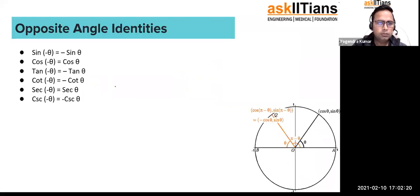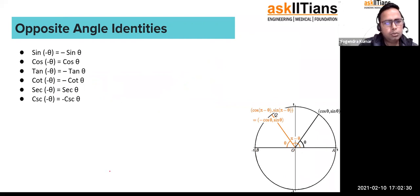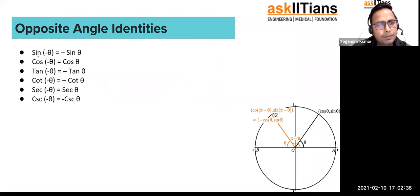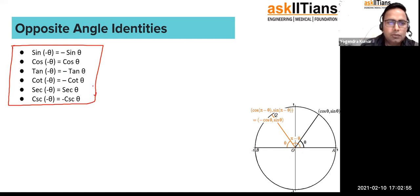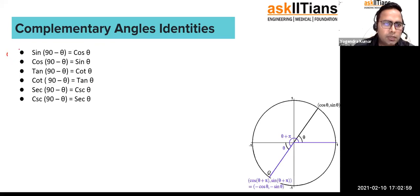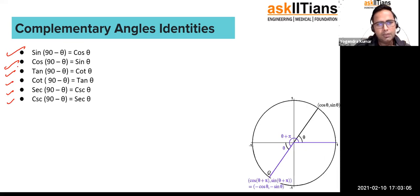For opposite angle identities: sin(−θ) = −sin θ and cos(−θ) = cos θ. You won't require these much as of now — they are not in the 10th grade portion. For complementary angle identities, we have things like sin(90° − θ) = cos θ, which we discussed in the last lecture as well.